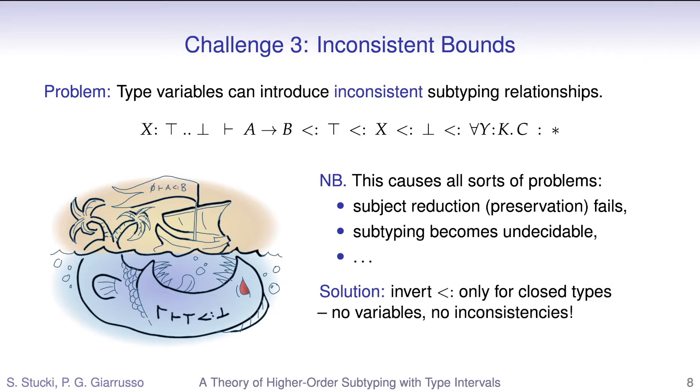The solution to this problem is basically to ignore it. We're just not going to attempt to prove subtyping inversion under inconsistent bounds. In fact, we're only gonna prove subtyping inversion in the empty context. That's really all we need to prove type safety.